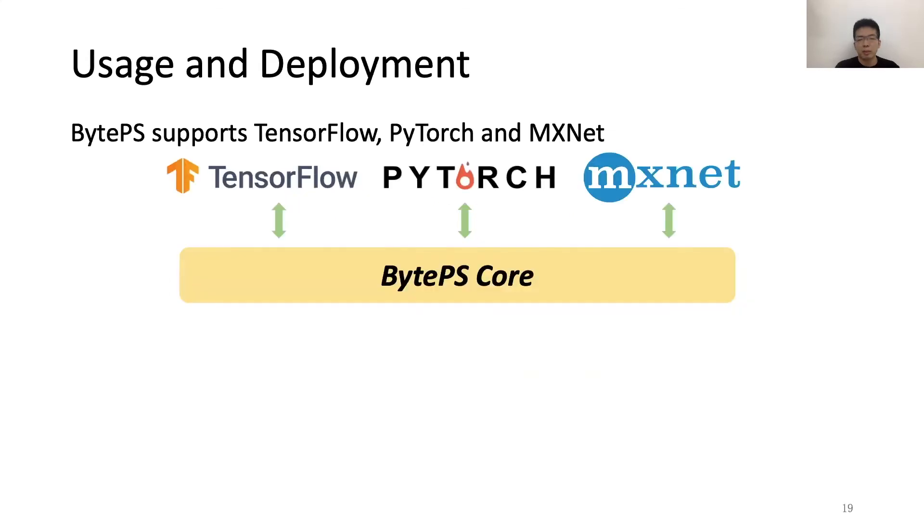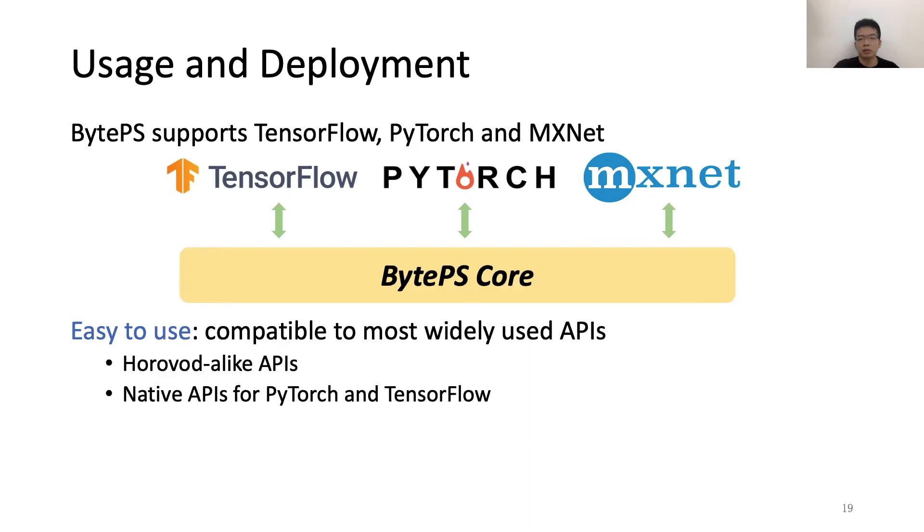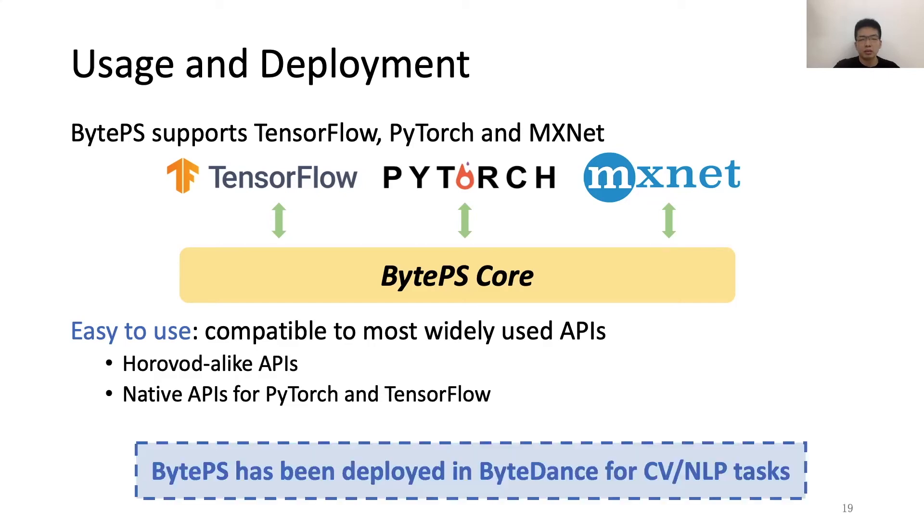As for usage, BytePS can support TensorFlow, PyTorch, and MXNet. It is also easy to use because it is compatible to most widely used APIs, including Horovod and native APIs for PyTorch and TensorFlow. We note that BytePS has been deployed in ByteDance for many tasks, such as computer vision and natural language processing.